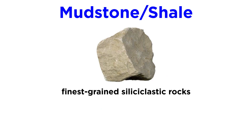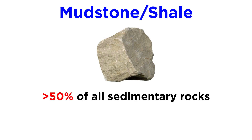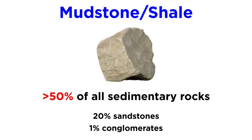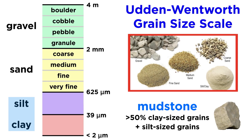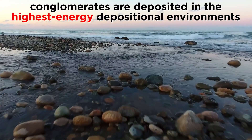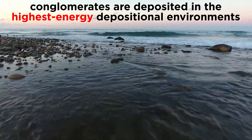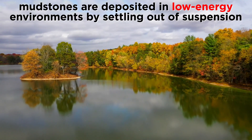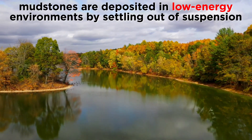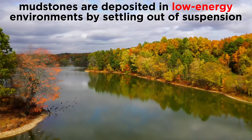Last but not least are the mudstones and shales, which are the finest-grained variety of siliciclastic rocks. More than half of all sedimentary rocks are mudstones, compared to about 20% for sandstones and only one percent for conglomerates. Recall that mud is a general term for silt and clay-sized grains. Hence, mudstones are composed of more than 50% clay-sized grains, with silt-sized grains making up most of the rest. Conglomerates with their very coarse grains are deposited in the highest-energy depositional environments, like rocky beaches and braided streams.